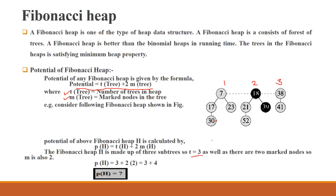Next, marked nodes are node 1 and node 2, so there are 2 marked nodes. Using the formula: potential of heap equals to 3 plus 2 into 2, which is 3 plus 4, equals to 7. So potential of this heap is 7.